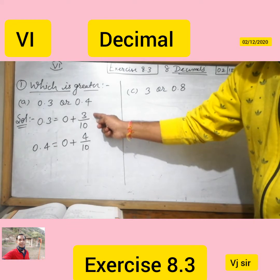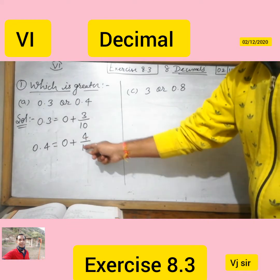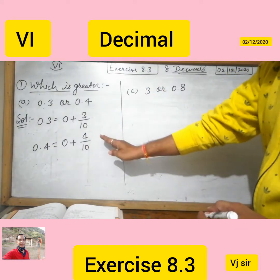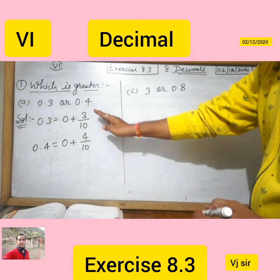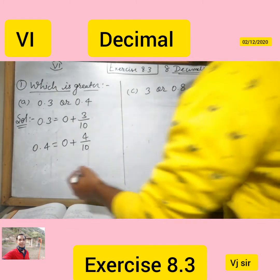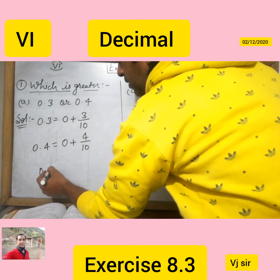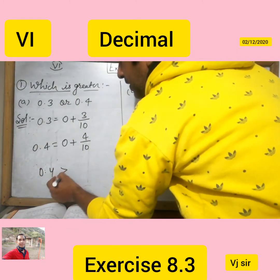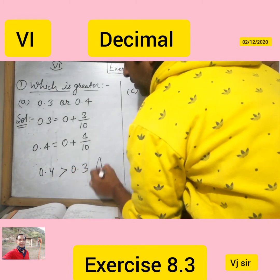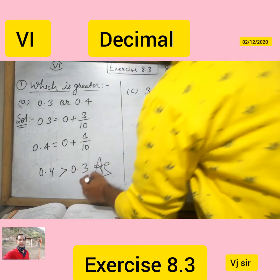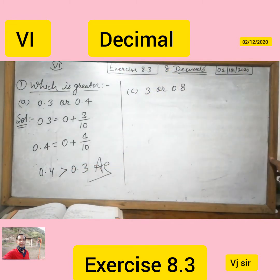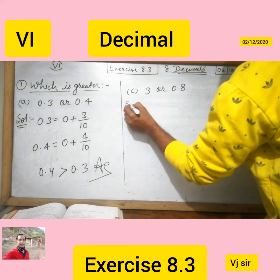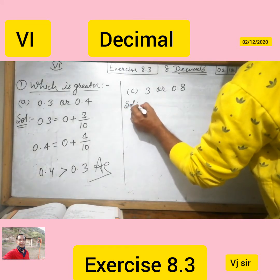If you look at both numbers on the tenths place, that is 3 and 4. We know that 4 is greater than 3, so we can say that 0.4 is greater than 0.3. It's that simple.